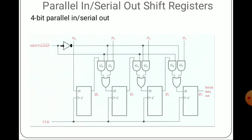This is the 4 bit parallel in serial out shift register. For 4 bit PISO, 4 flip flops are required. If it is 8 bit PISO, then 8 flip flops are required. The operation and concept are the same. Hope you understood and enjoyed this video — please like, share and subscribe. Thank you.